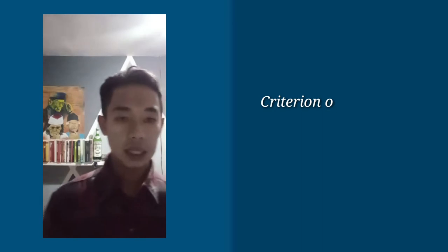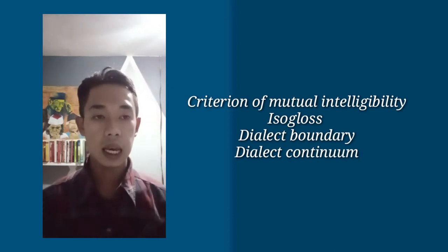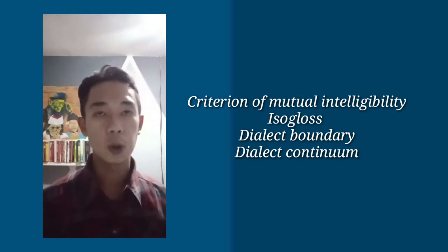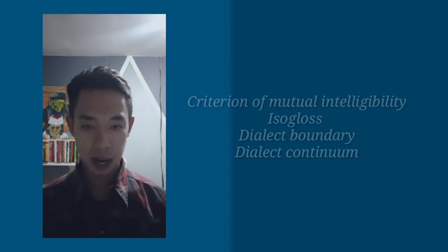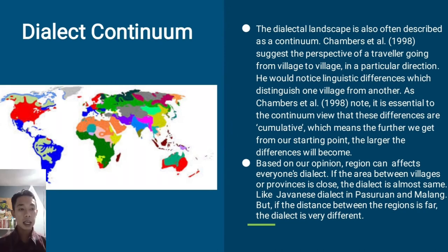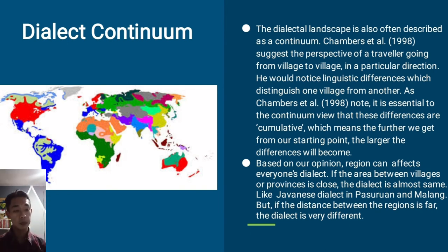Those are the simple explanations about dialect boundary, the definition of criterion of mutual intelligibility, and isogloss. Now let's start with the third explanation about the dialect continuum. The dialectal landscape is often described as a continuum, based on Chambers et al. 1998, from the perspective of a traveler going from village to village. You would notice linguistic differences which distinguish one village from another. These differences are cumulative — the further we get from our starting point, the larger the differences will be.